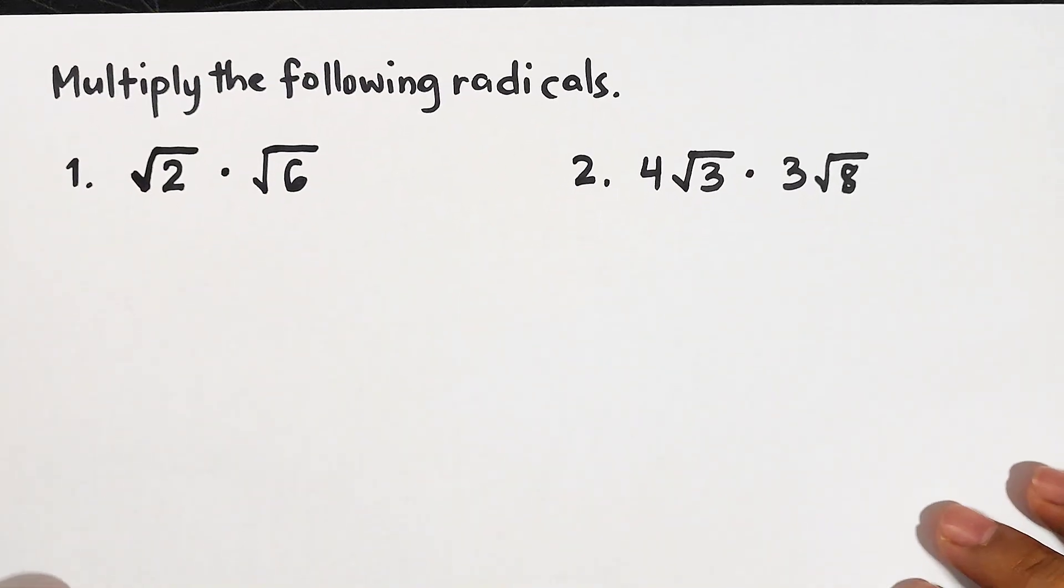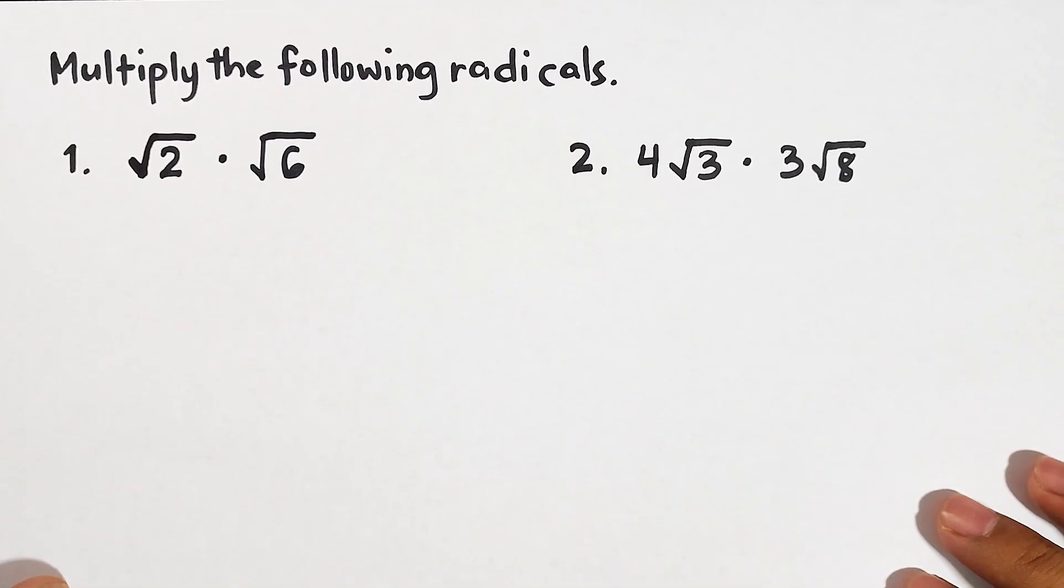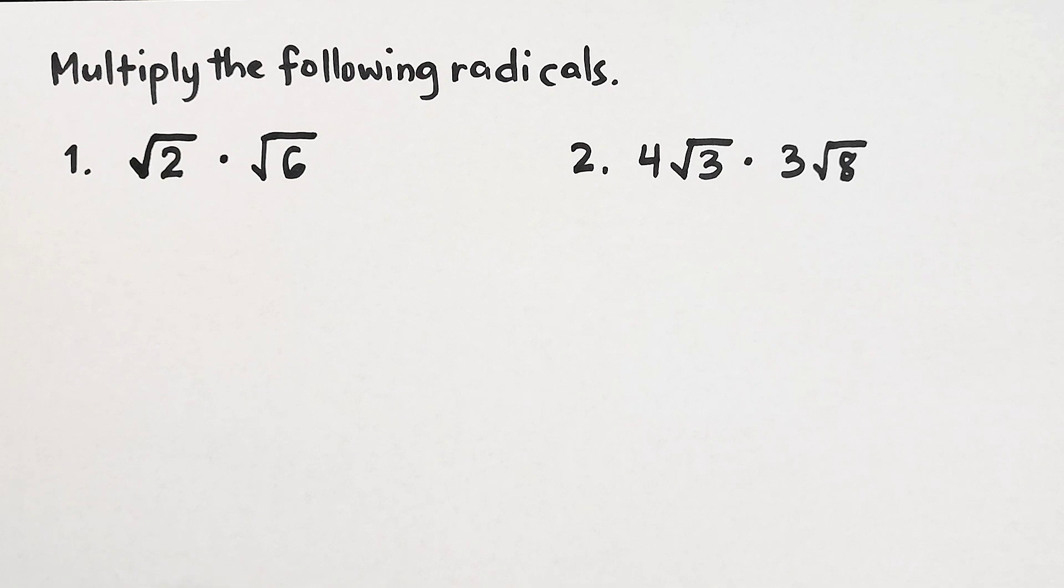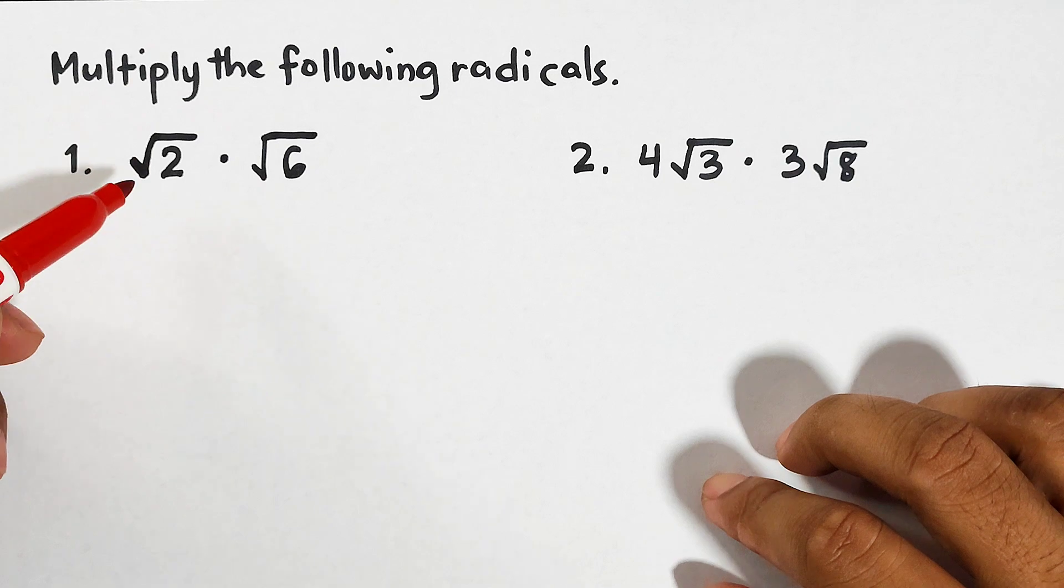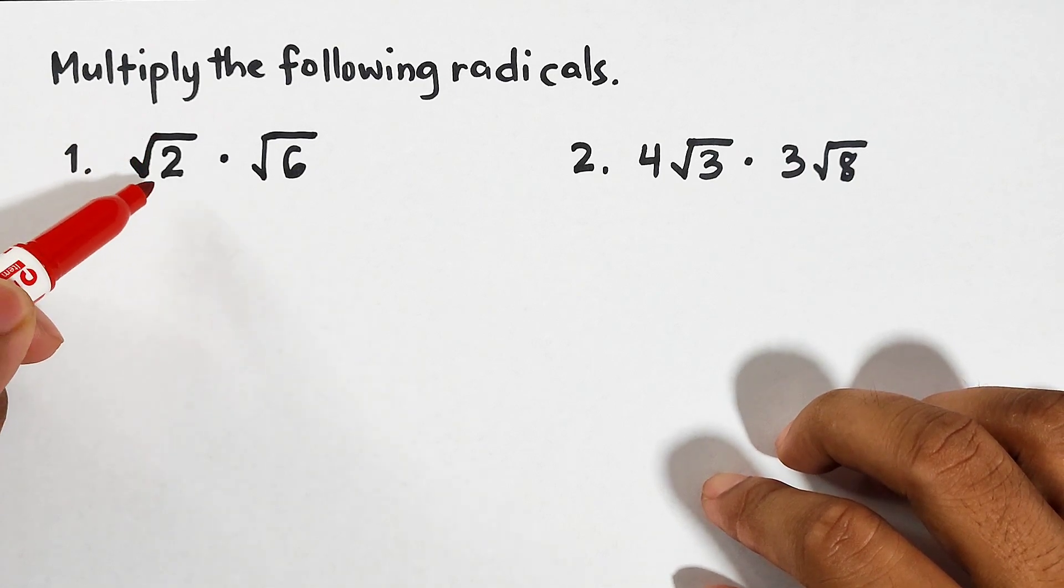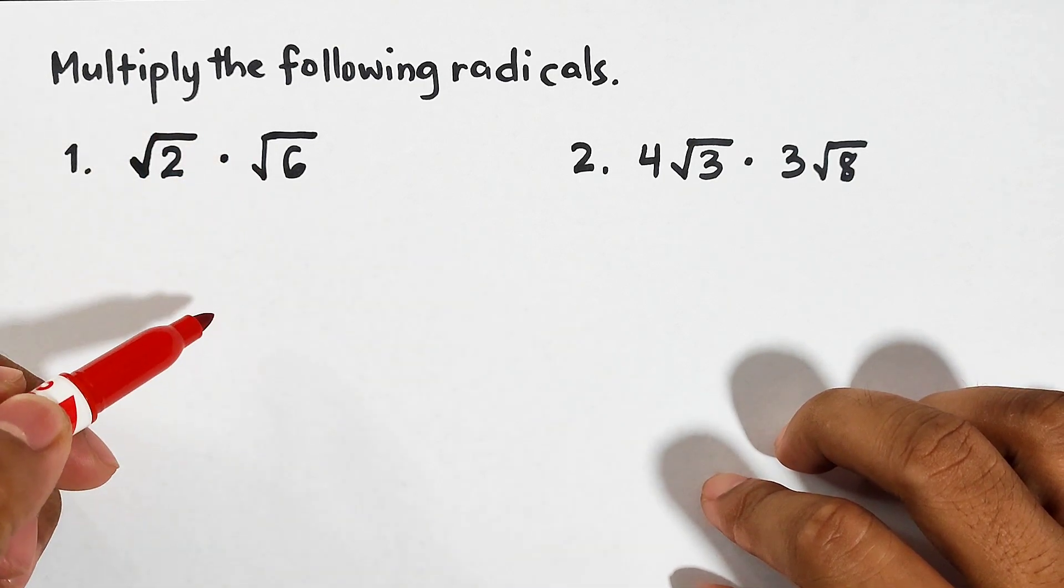So without further ado, let's do this topic. What we have here are two examples for me to discuss how to multiply radicals. This is the first level of this topic. Now let's have the first example: we have the square root of 2 times the square root of 6.